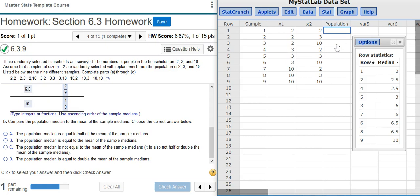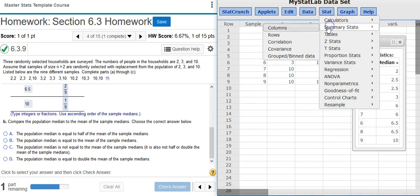And here I'm going to put in the values from the population, which from our problem statement listed here is 2, 3, and 10. Now I'm looking for the median of the population. So I do that by coming up to Stat, Summary Stats, Columns.